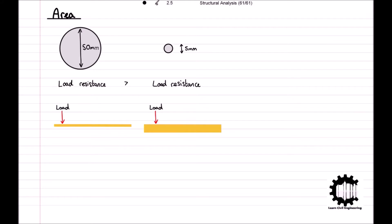Likewise, a thin plank of wood is more likely to snap than a thicker plank. Therefore, it is important to know the cross-sectional area of an element when analyzing its ability to resist a load.